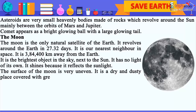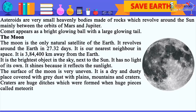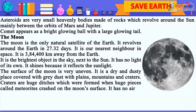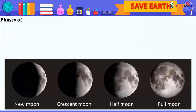The surface of the moon is very uneven. It is a dry and dusty place covered with grey dust, with plains, mountains and craters. Craters are huge ditches which were formed when huge pieces called meteorites crashed on the moon's surface. It has no air or water. Hence, no life exists on the moon.